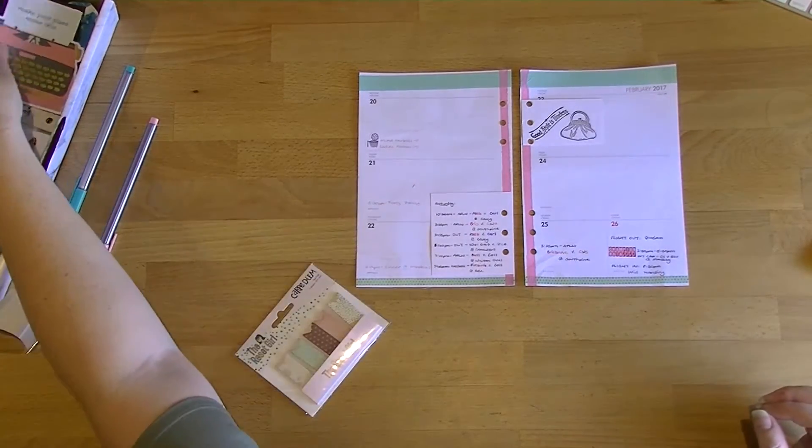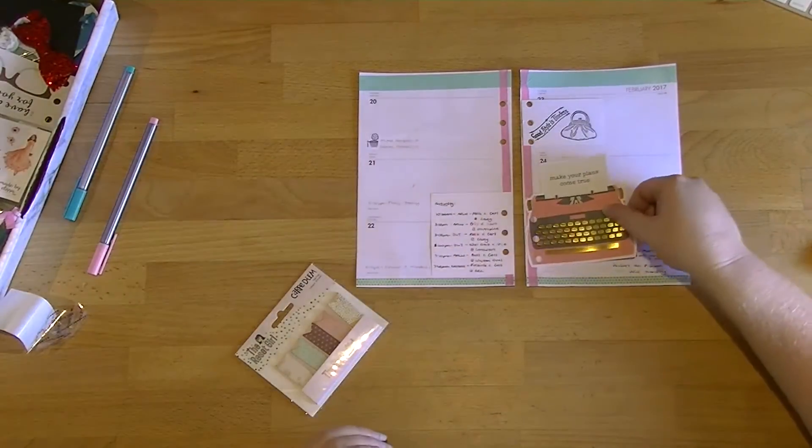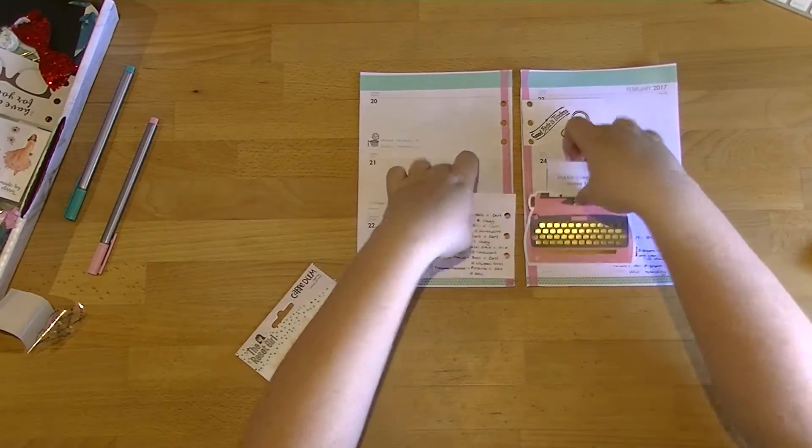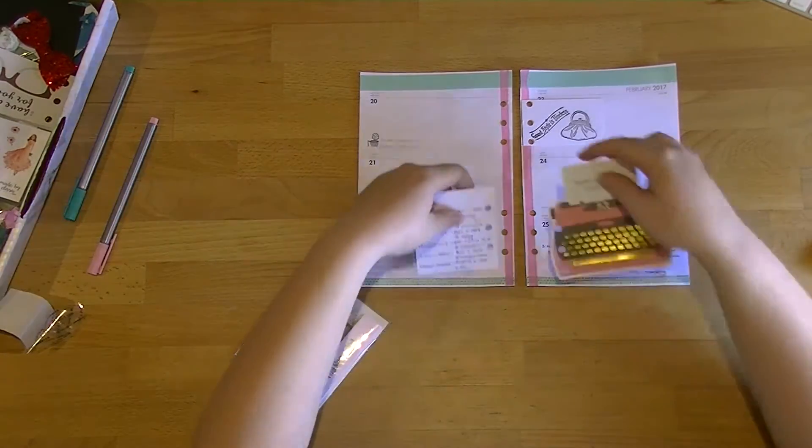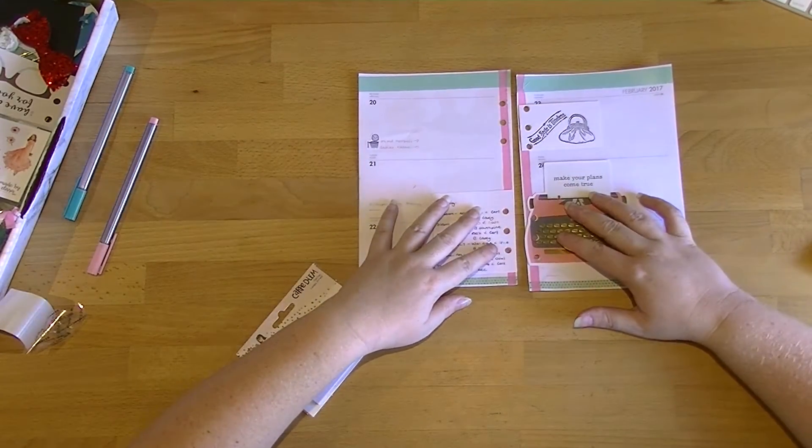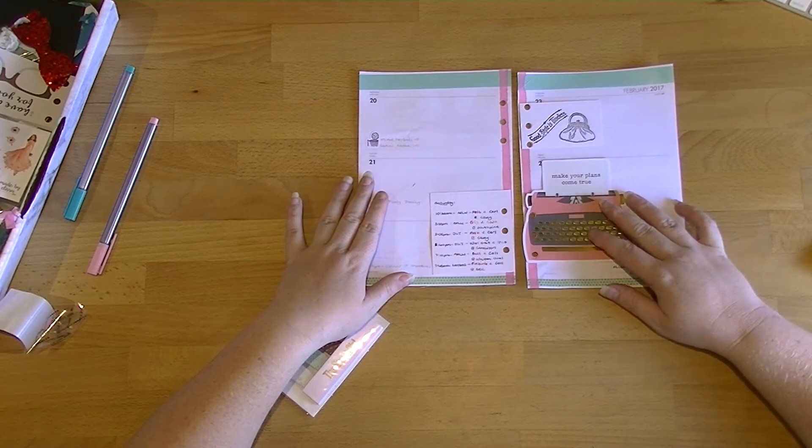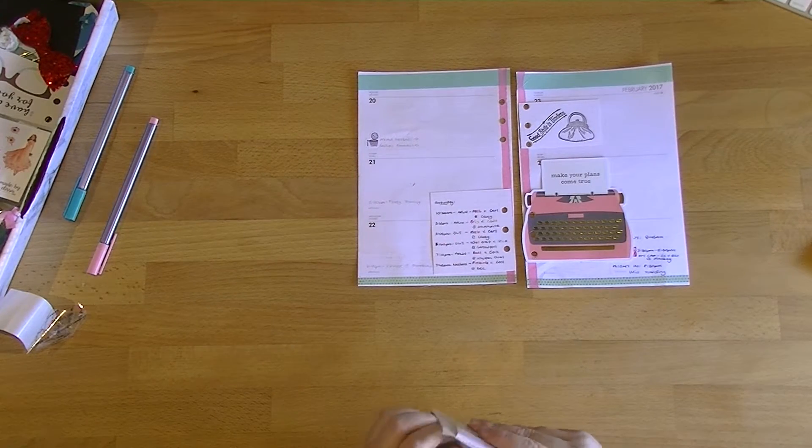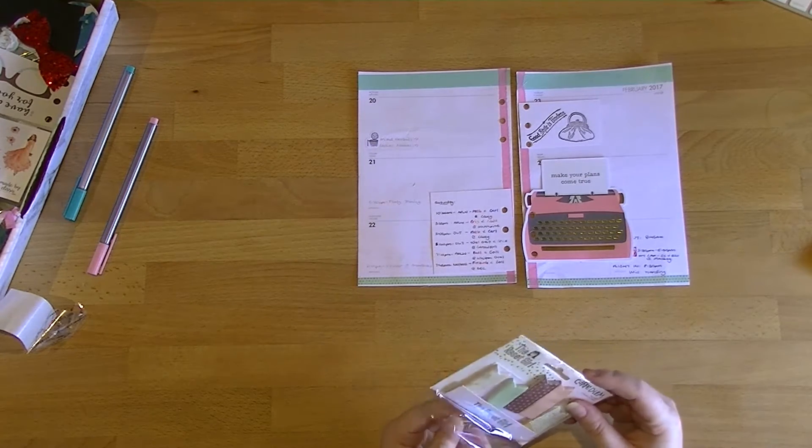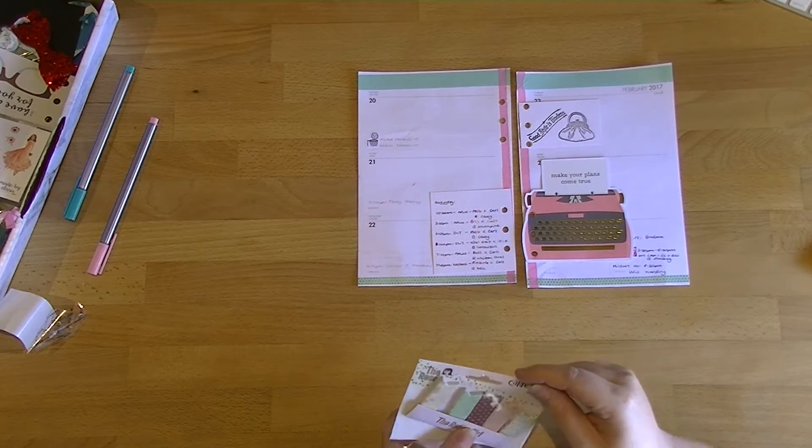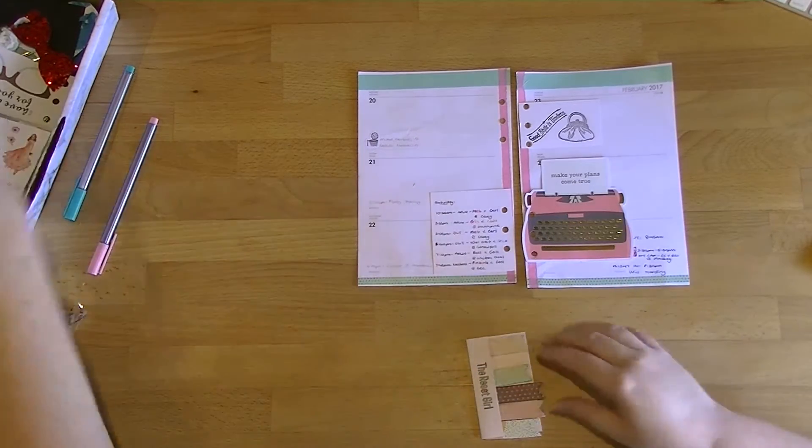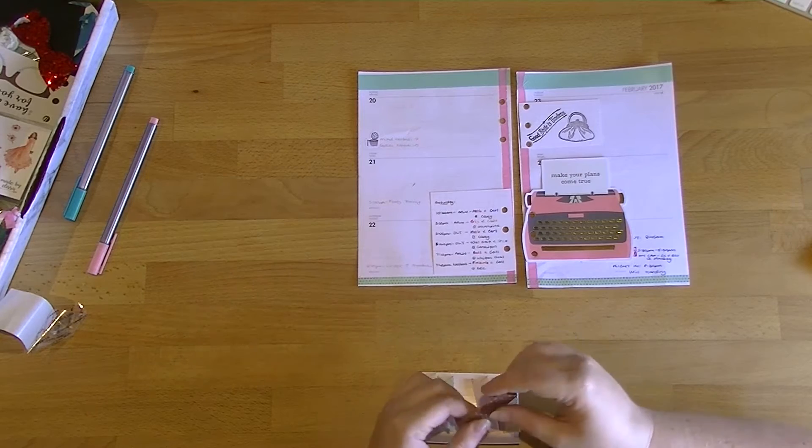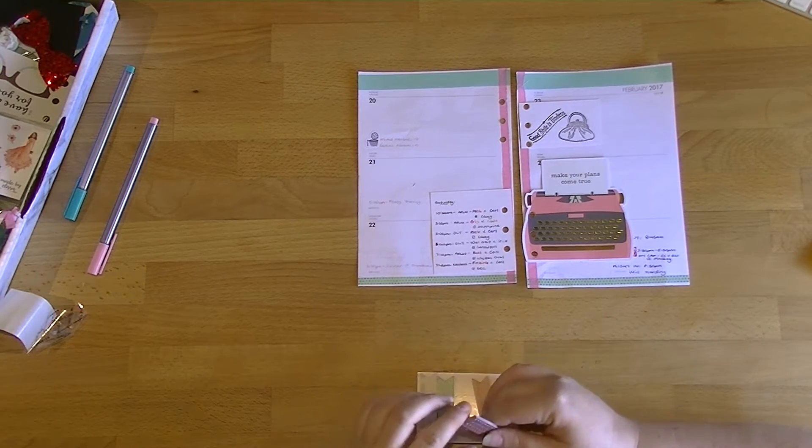First of all, I really want to use this typewriter. I'm going to put that down there. I know that means I have two flippers and I did consider sticking this on the back, but nothing I tried looked right. So I thought I'd rather have too many flippers than not use that this week. Then I'm going to grab some of these gorgeous page flags from the Reset Girl. I haven't used any of these yet.